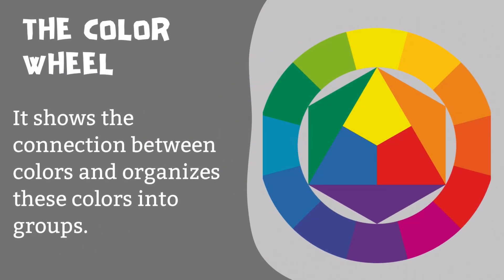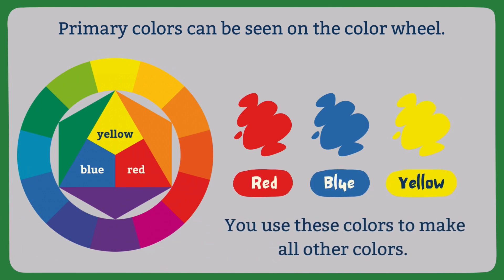The color wheel shows the connection between colors and organizes these colors into groups. Primary colors can be seen on the color wheel: red, blue, and yellow. You use these colors to make all other colors.